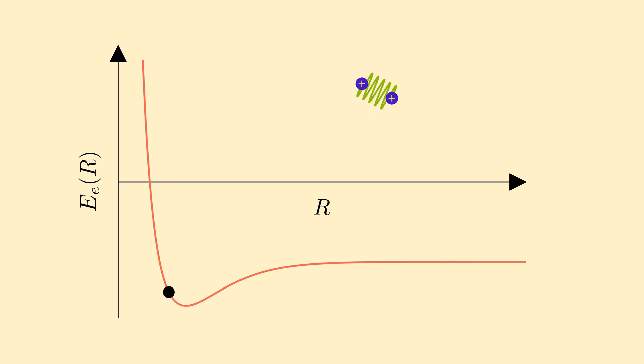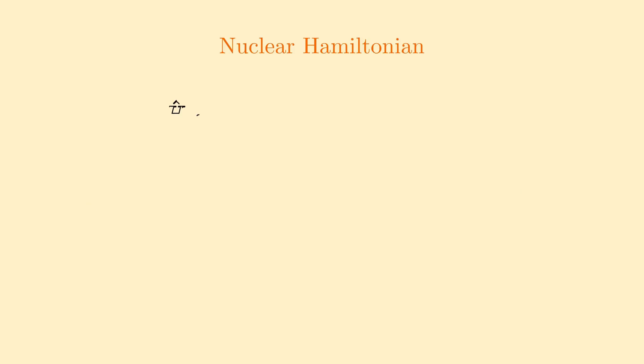The energy of the electrons, in effect, becomes potential energy for the nuclear motion. Hence Schrodinger equation for the nuclear motion can be written like this.